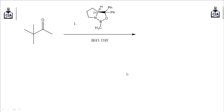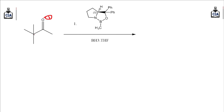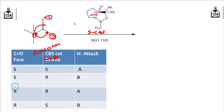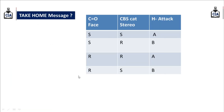Now let us check another example. For this reaction, to find the face of this ketone, we number 1, 2, 3 — the direction is anticlockwise. So this is the si-face. Our catalyst has S stereochemistry, that is the S-CBS catalyst. Checking our short trick: si-face with S-CBS catalyst means the attack is from above the plane. So our product will be at below the plane, giving us this product.